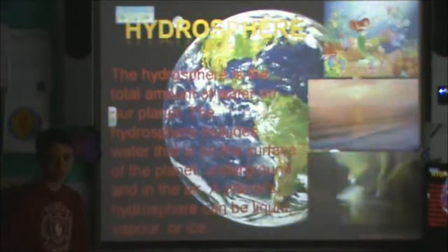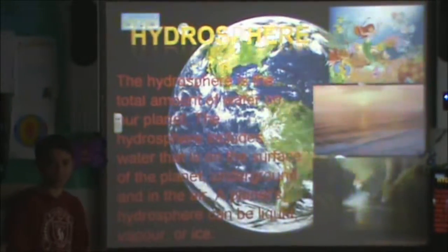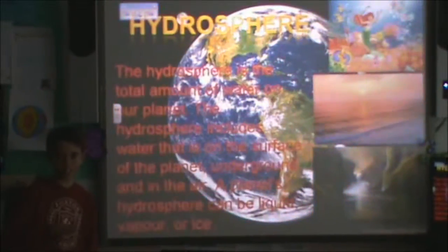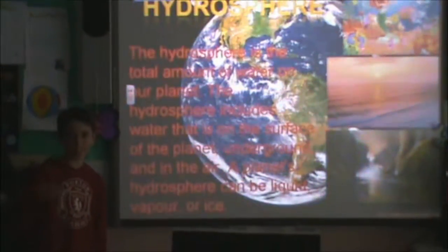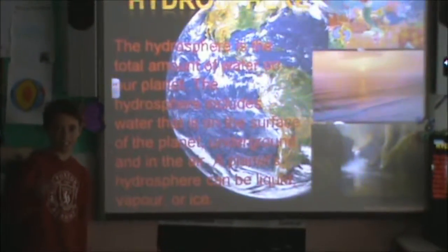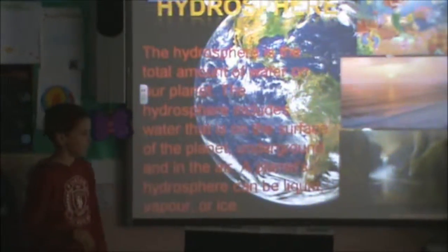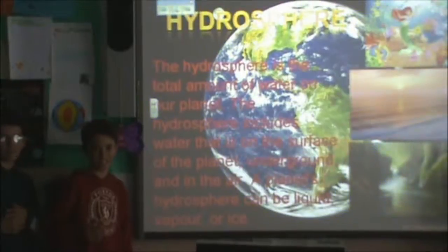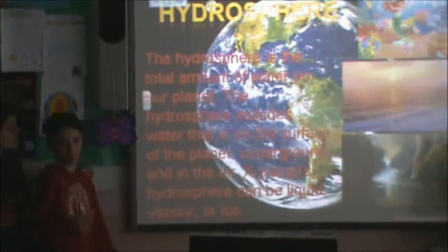The hydrosphere is the total amount of water on our planet. It contains the water on the Earth's surface and the underground water. The water can be in three different types: ice, vapor, and liquid.